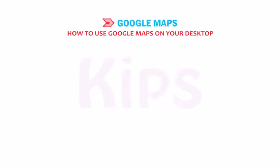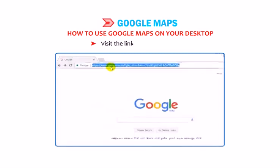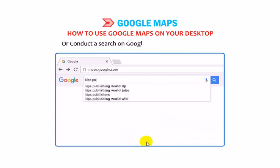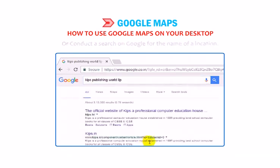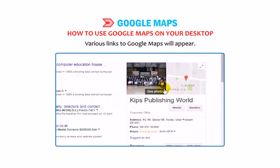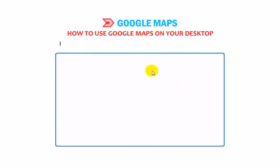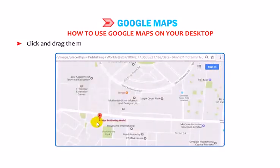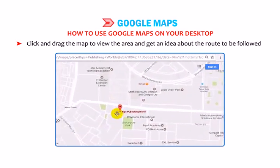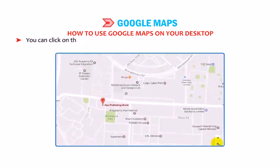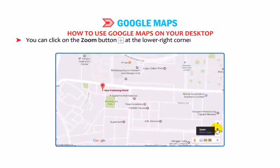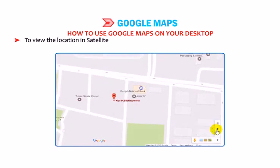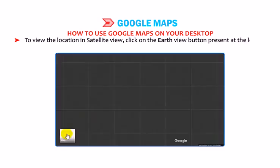Let us find out how to use Google Maps on your desktop. Visit maps.google.com or conduct a search on Google for the name of a location. Various links to Google Maps will appear — select the link, and it will move the location pointer to the destination point. Click and drag the map to view the area and get an idea about the route to be followed. You can click on the zoom button at the lower right corner to zoom in for a better view. To view the location in satellite view, click on the earth view button present at the lower left corner.